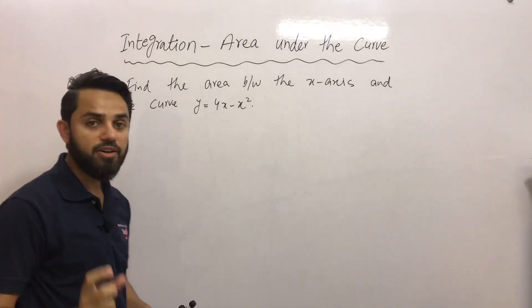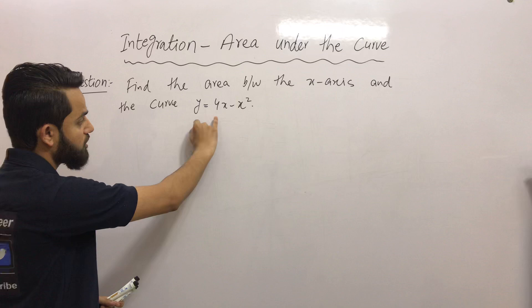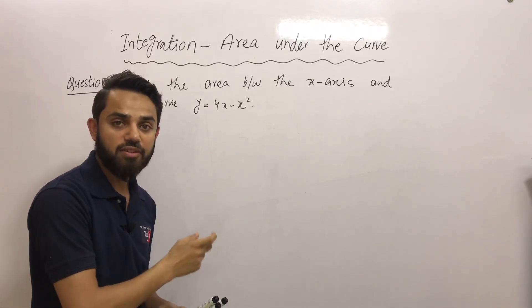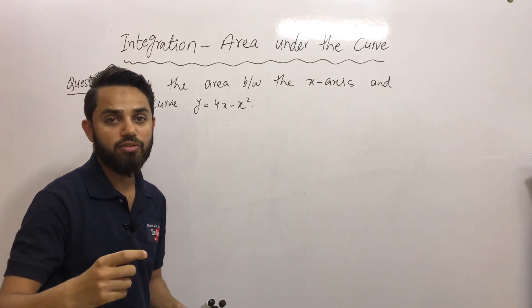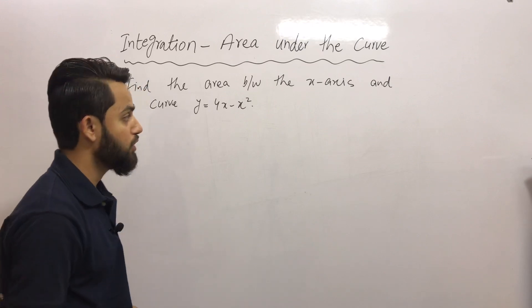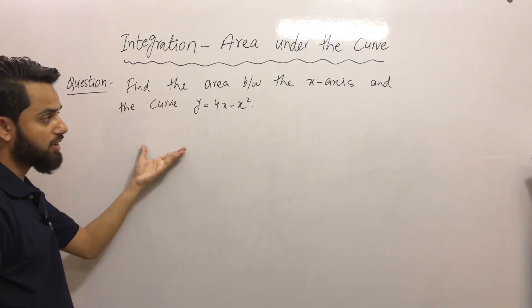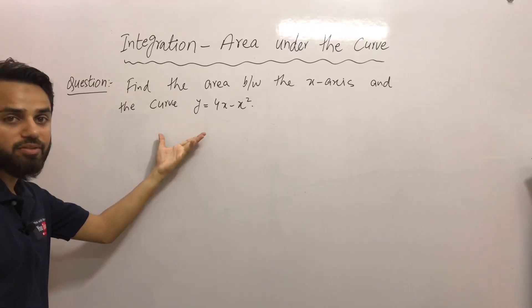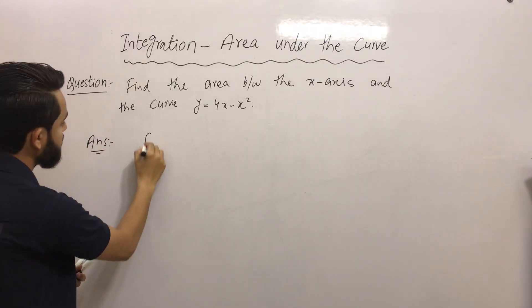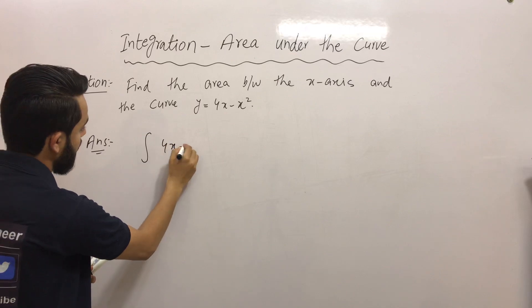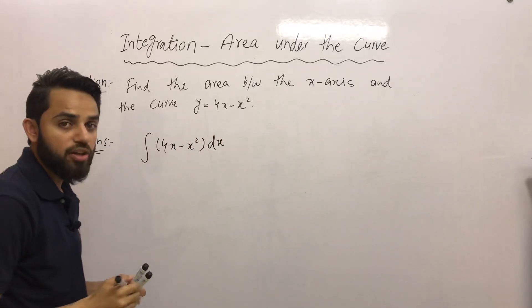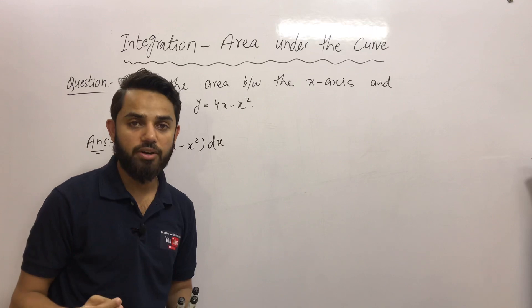Here, y is a function of x where y = 4x minus x squared. The limits of integration we need for these questions should be for x — say x = a and x = b as the two limits. In the previous question the limits were given, but here we do not have them. There are three things you need to do to find the area under the curve. The first is to integrate your function with the given or found limits.